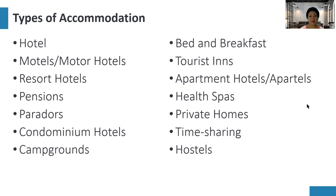Next is pensions or pension hotels. These are usually a family type of accommodation wherein old houses are converted into pension houses. Next are paradors, which are usually found in Spain or in Europe — old castles converted by the government into hotel accommodation.